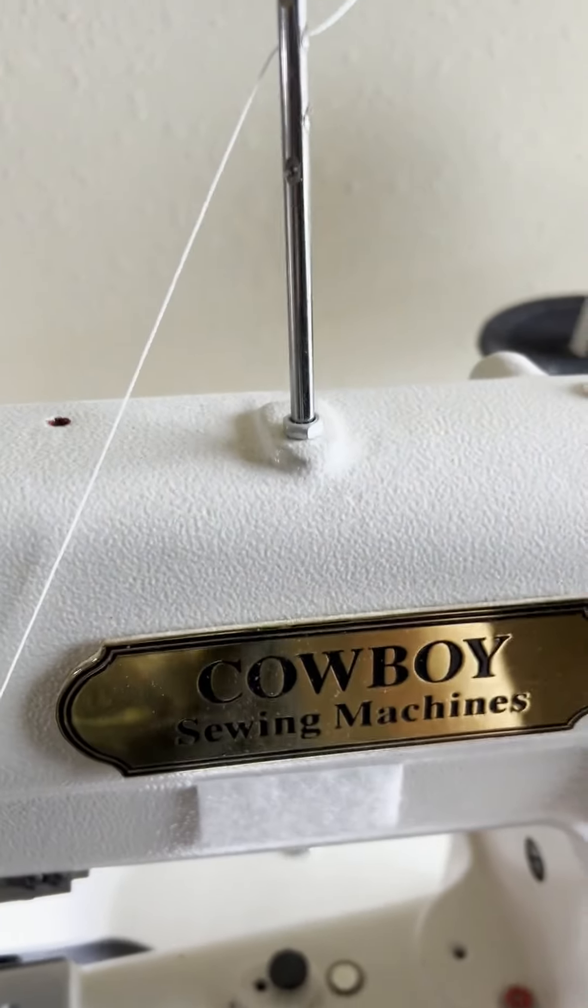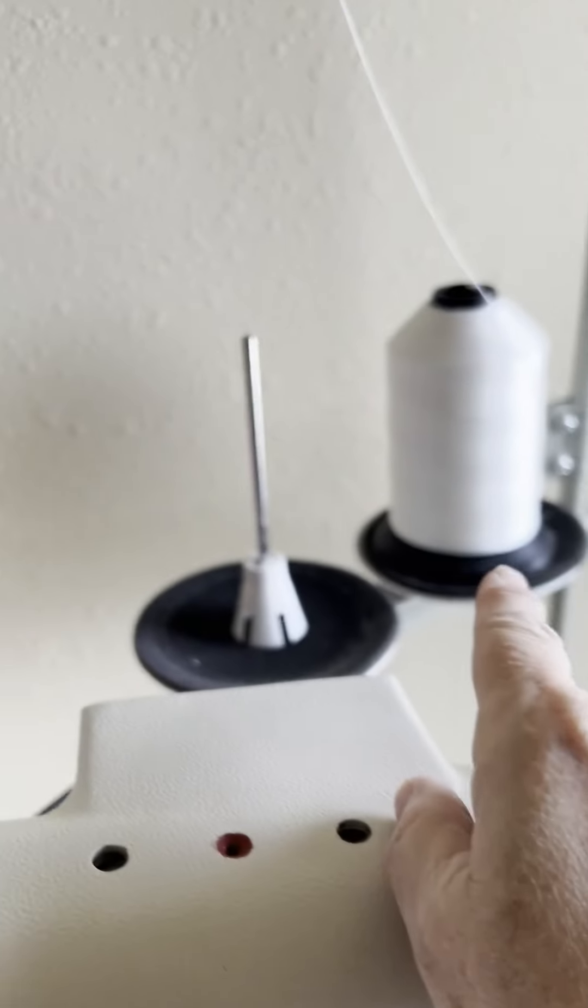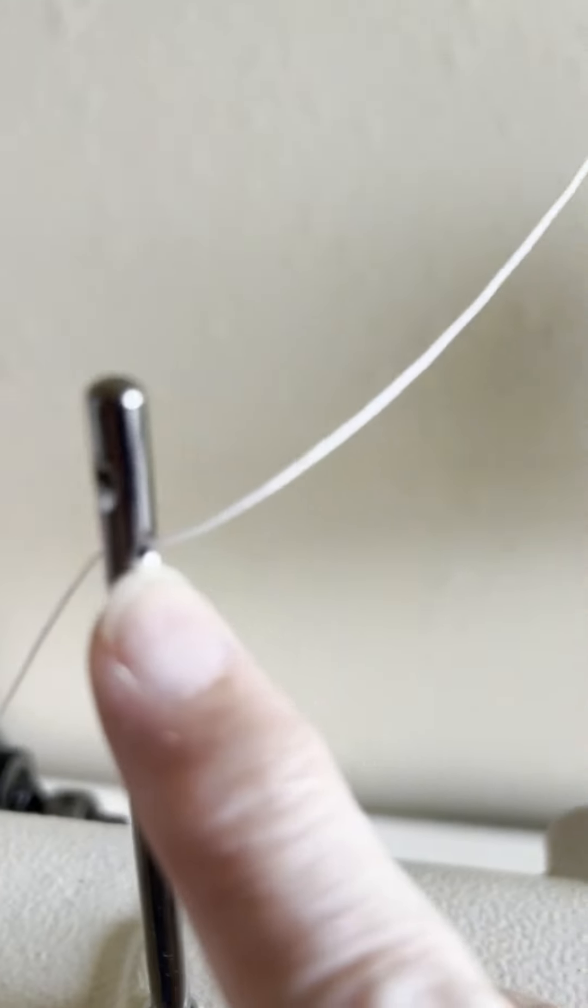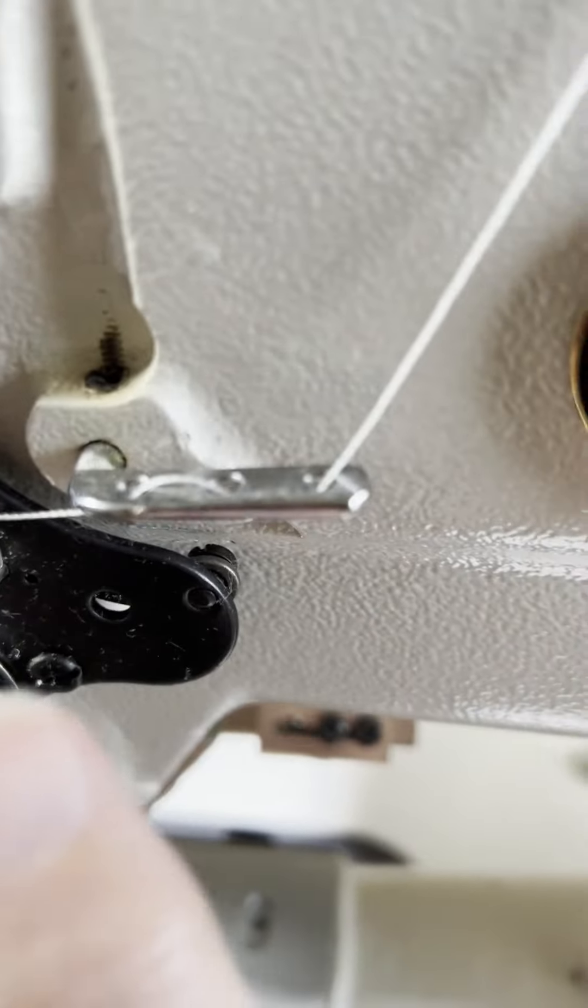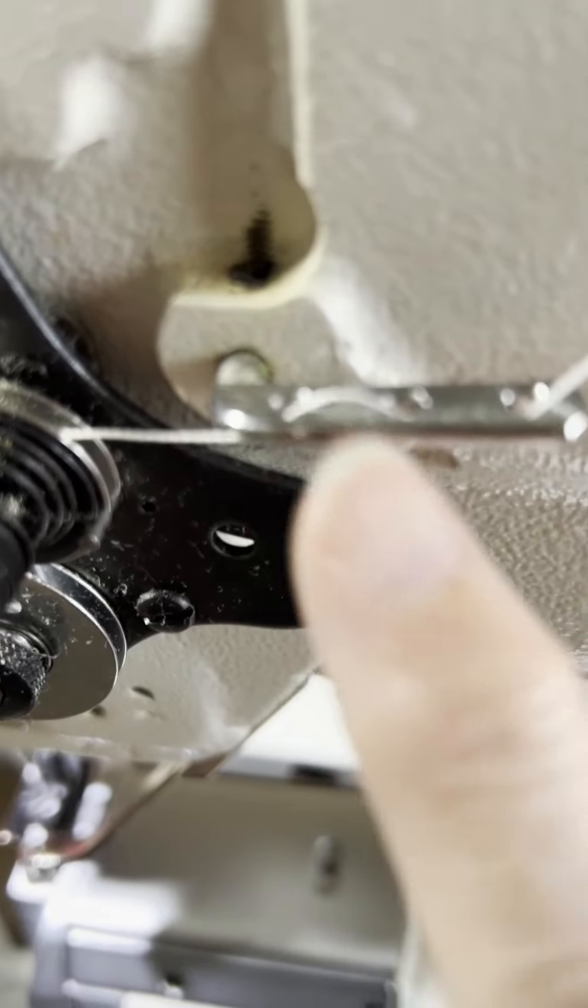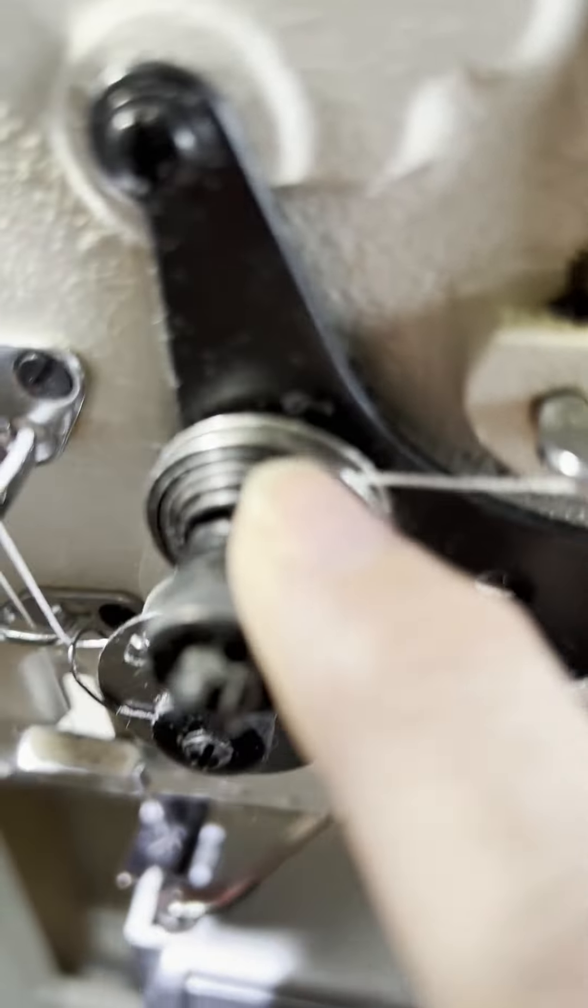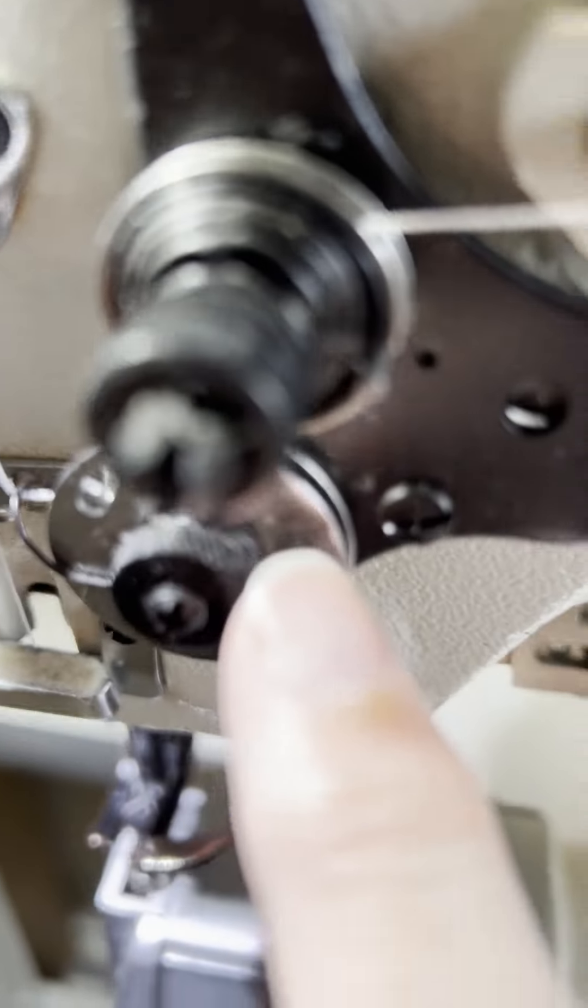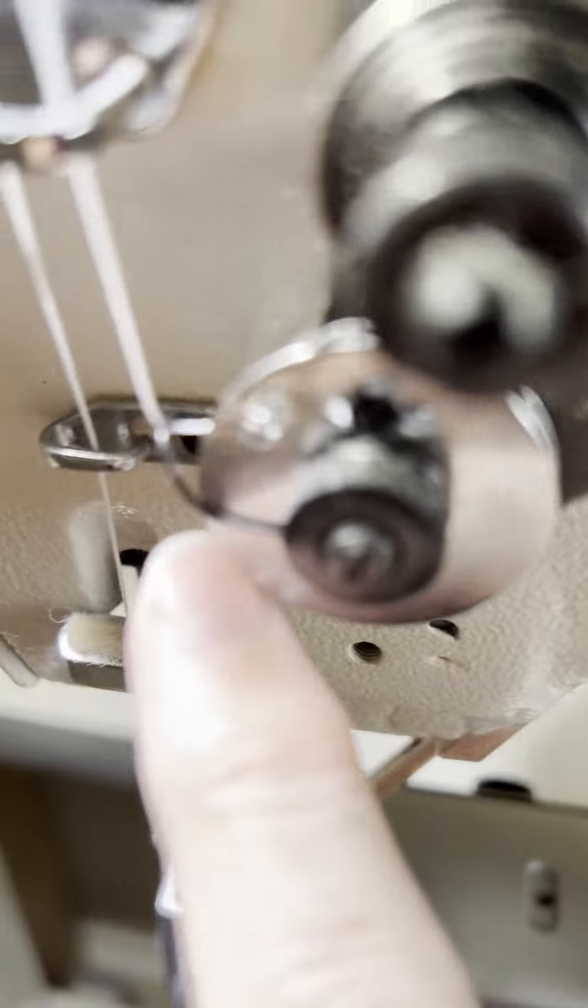To thread the Cowboy CB 341, bring your thread from the spool stand up through the loop, through this hole here, and down to this part where you're going to go in, under, over. You're going to go through all three holes there, around this here like this, then down and around this way here.